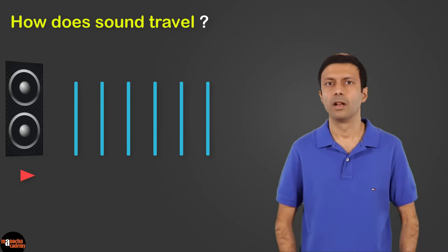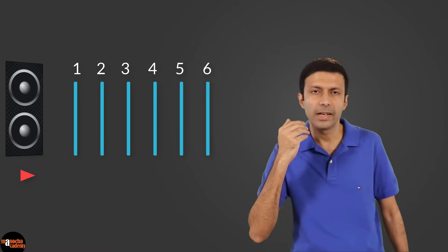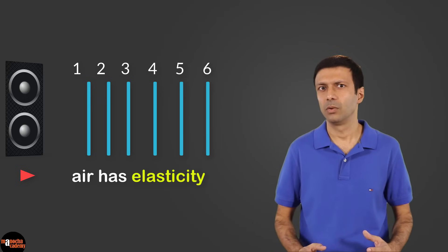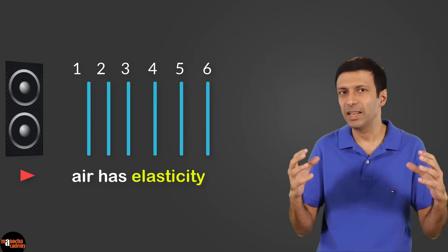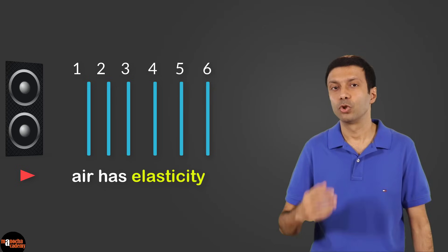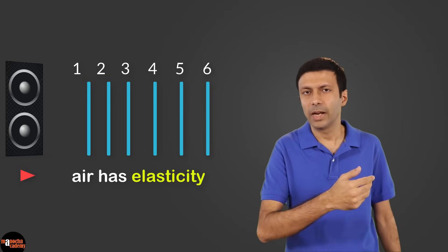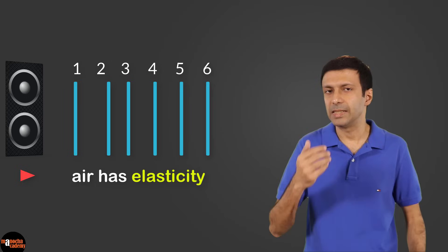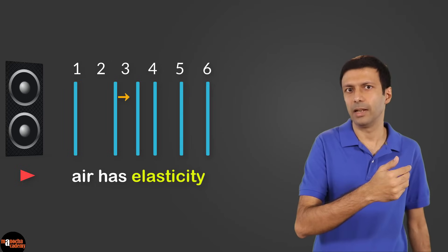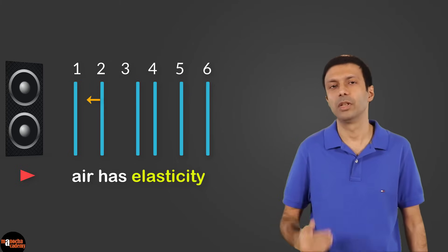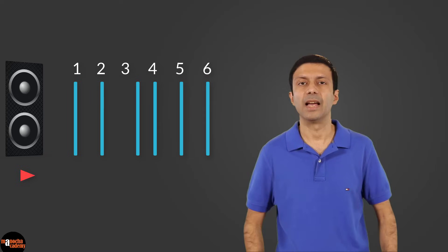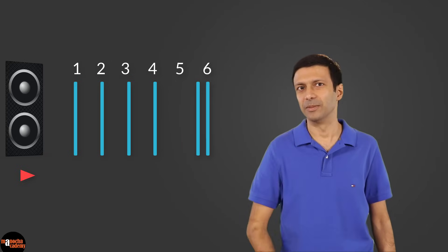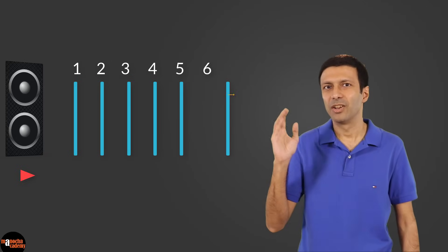The vibrations disturb the first layer of air, which disturbs the second layer of air, and this disturbance continues through the layers. Now, because air is an elastic medium — which means it has some elasticity and behaves like a rubber band — the first layer, after disturbing the second layer, will spring back to its original position. Similarly, the second layer, after disturbing the third layer, will spring back to its original position due to the elasticity of air, and this process continues.